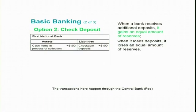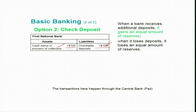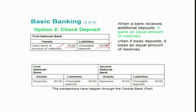Scenario two: a bank receives a deposit where someone deposits a check with a bank. In this case, immediately on the asset side you can see that cash items in process of collection increase by $100. This amount will be credited as a deposit in the name of the person who deposited the check, and the liability of the bank also increases by $100. When a bank receives additional deposits it gains an equal amount of reserves; when it loses deposits it loses an equal amount of reserves.